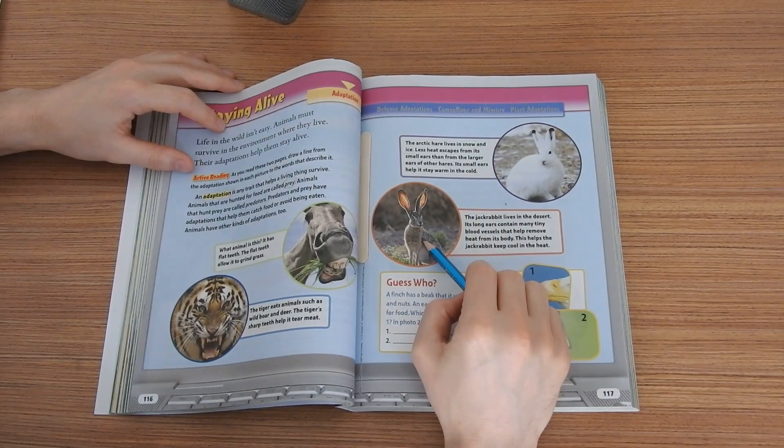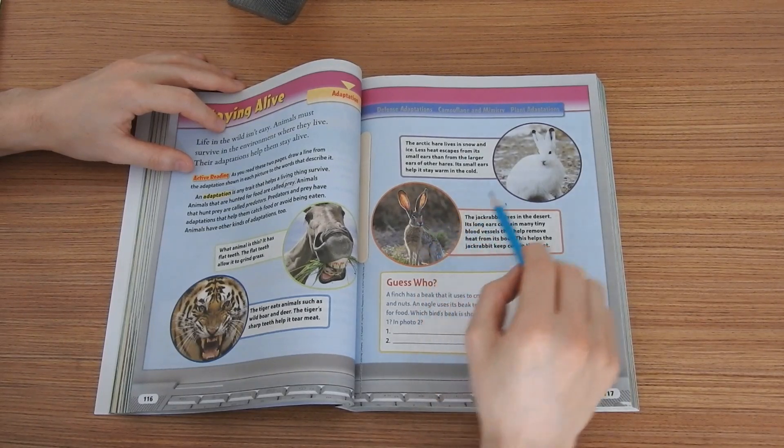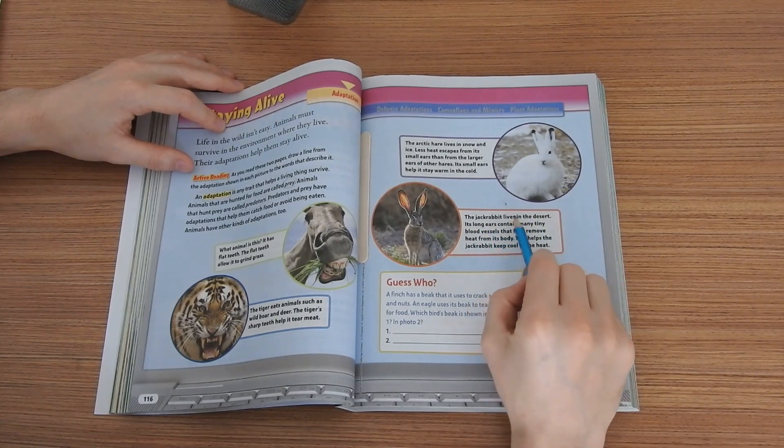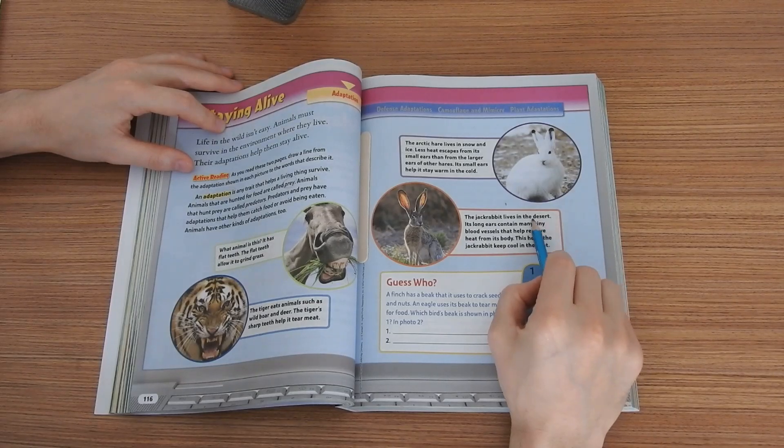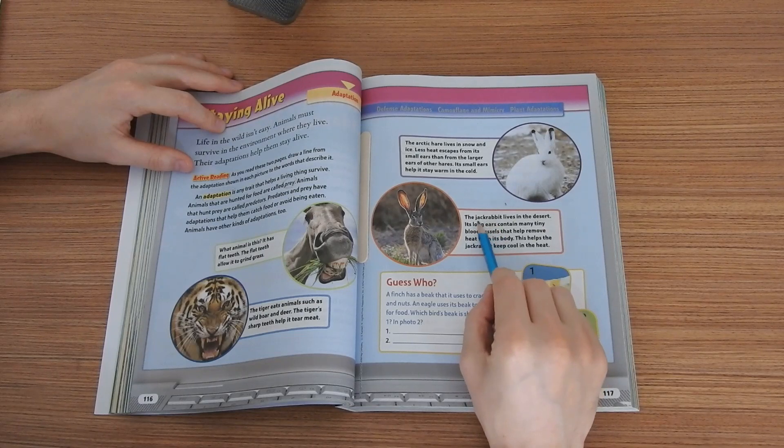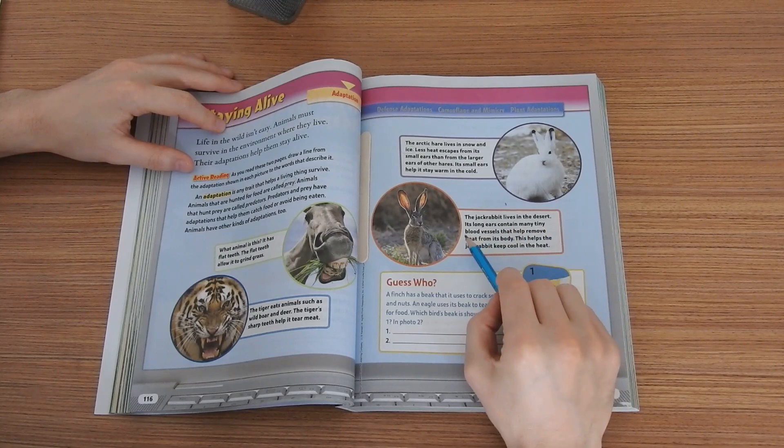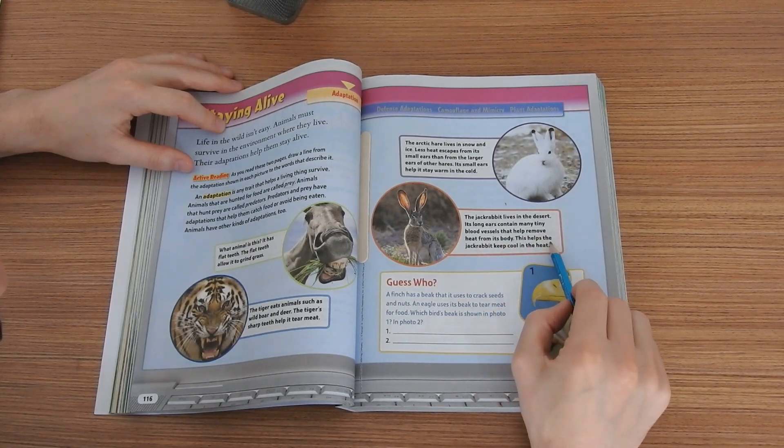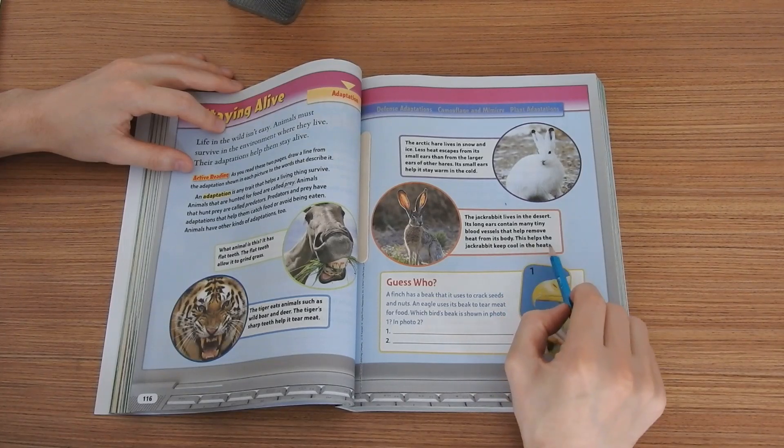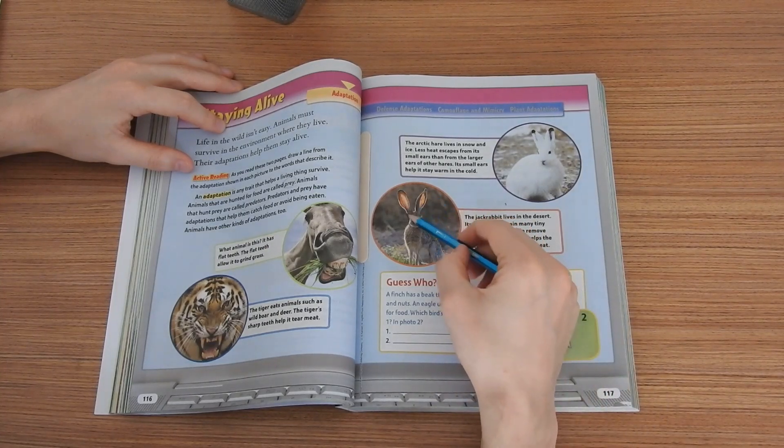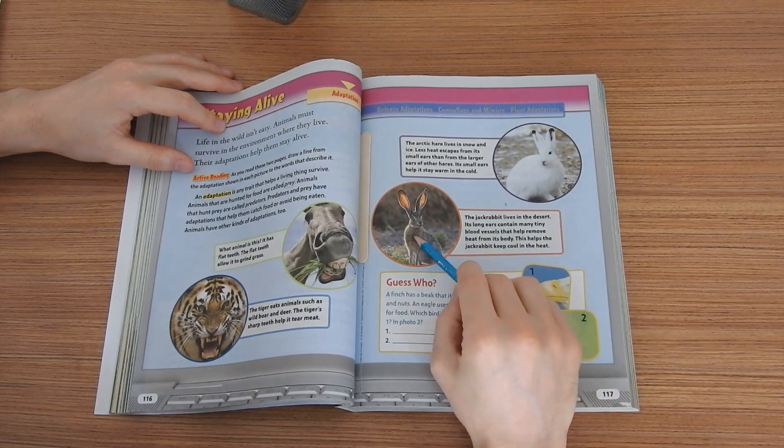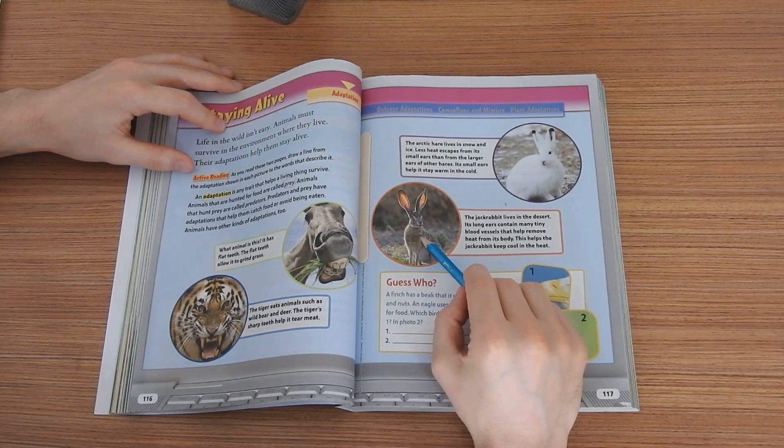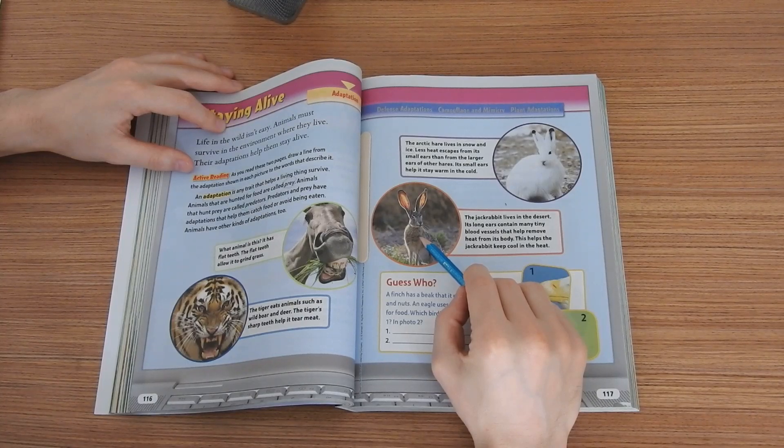Now let's continue to the next picture. We see here a different rabbit with much larger ears. So what's the name of this rabbit? Jackrabbit. The jackrabbit lives in the, what is this? Desert. The jackrabbit lives in the desert and we know that the deserts are very very hot. So its long ears contain many tiny blood vessels that help remove heat from its body. This helps the jackrabbit keep cool in the heat. So basically these long ears help this kind of rabbit that lives in desert to remove heat from its body and keep it cool while the weather in the desert is hot.